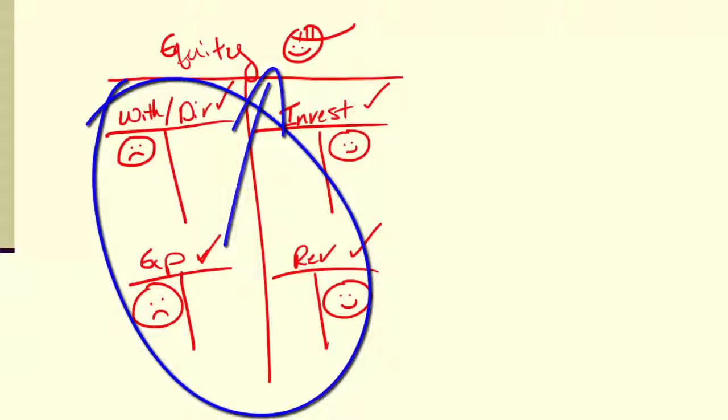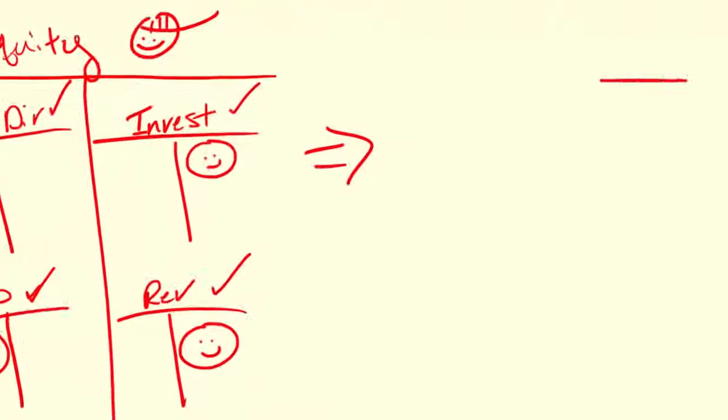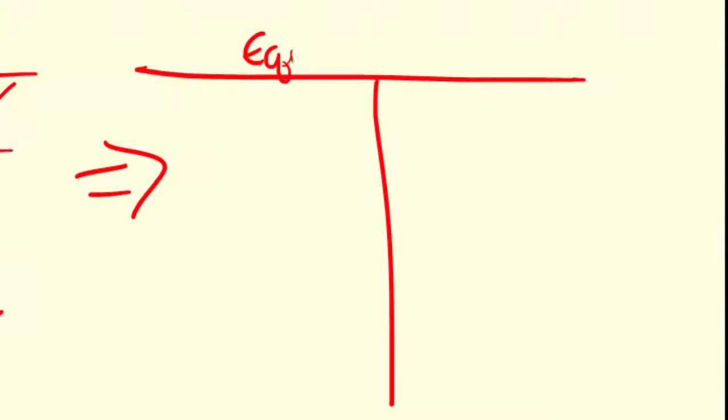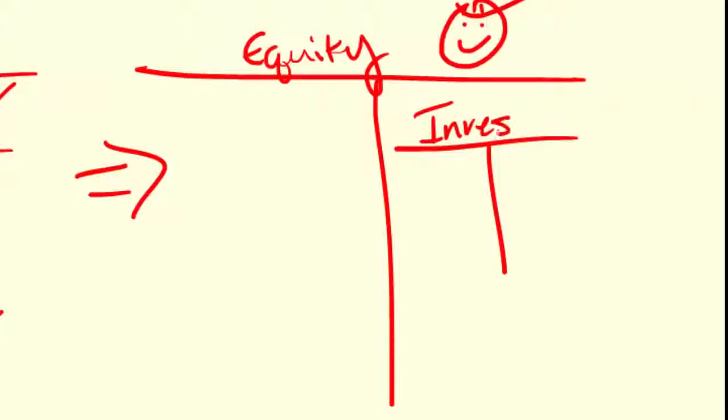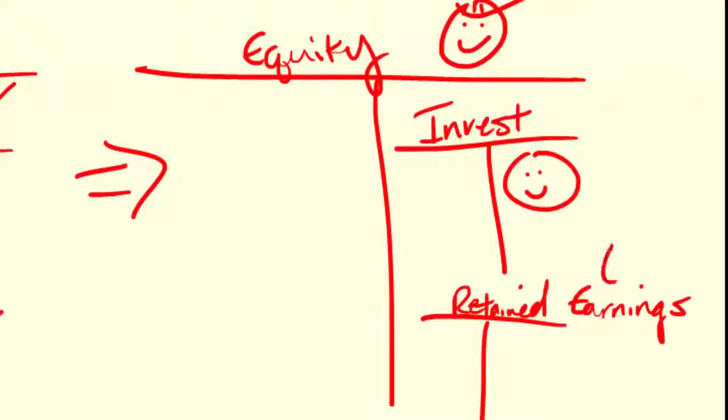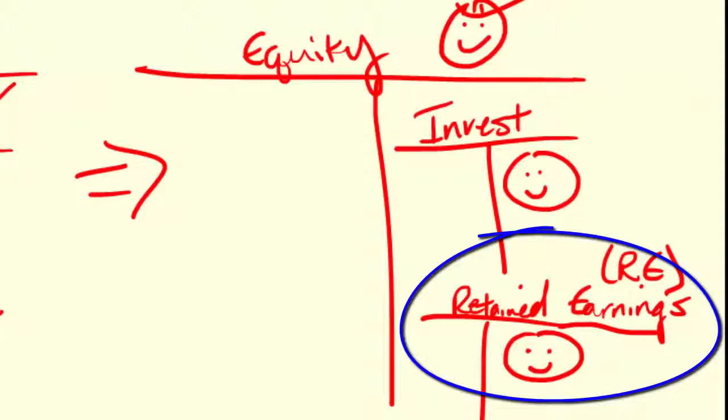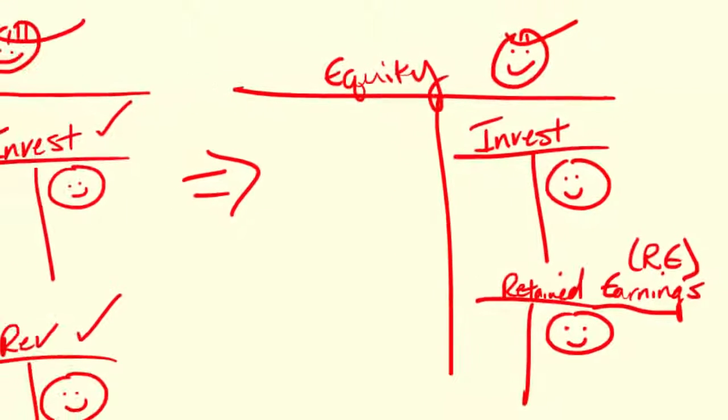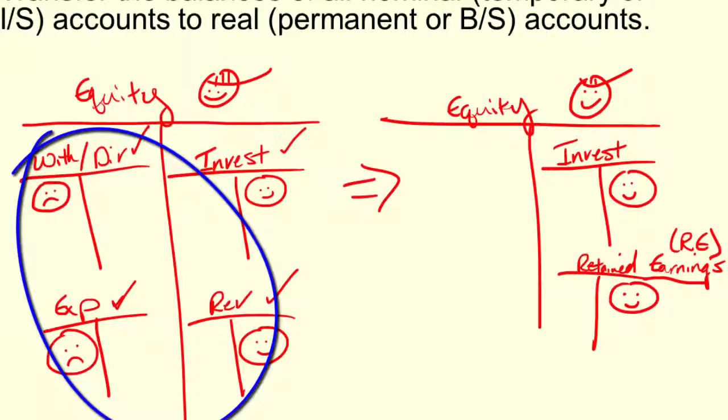Instead of putting everything back into a generic equity account or putting everything into the investment account, we decided we'd break it down into two. Here's our equity and there are two parts of equity. There's what the owners actually invest, meaning they give us money or other assets, and there's what they leave in the business and we call those retained earnings. So what we're going to do is close everything that's not an investment into retained earnings.